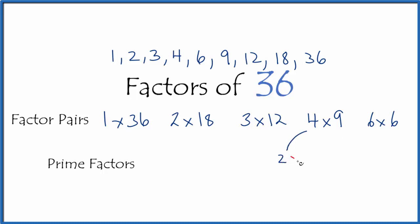Because 2 times 2, that gives us 4. These are both prime numbers. And 9, 3 times 3, that gives us 9. So 2 times 2, times 3 times 3, that equals 36. And these are all prime numbers. So these are the prime factors for 36.